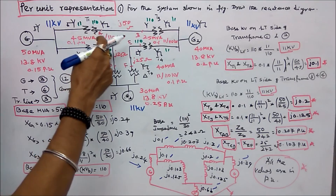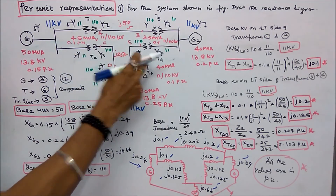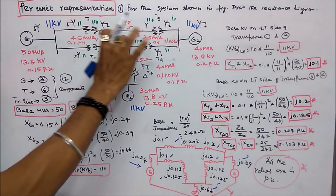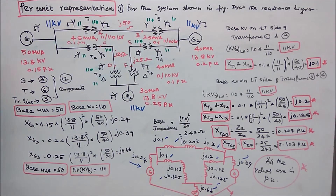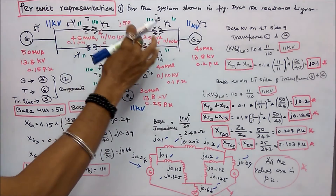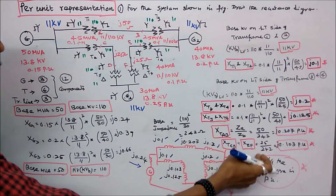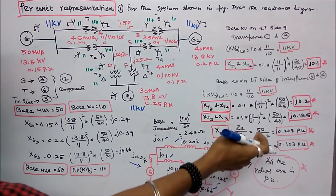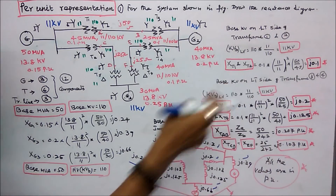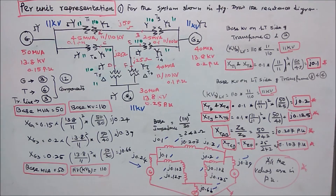Transmission lines CD and EF both have reactance j25 ohms, so their per unit values are the same. Per unit = 25 / 242 = j0.103. Both CD and EF are j0.103 per unit.